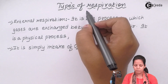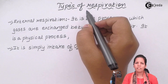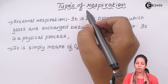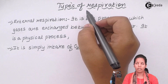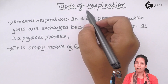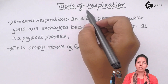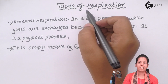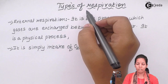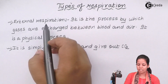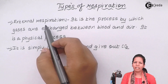Types of respiration: the first type that every eukaryotic organism undergoes — whether it is you, a donkey, horses, cats, or birds — is external respiration.